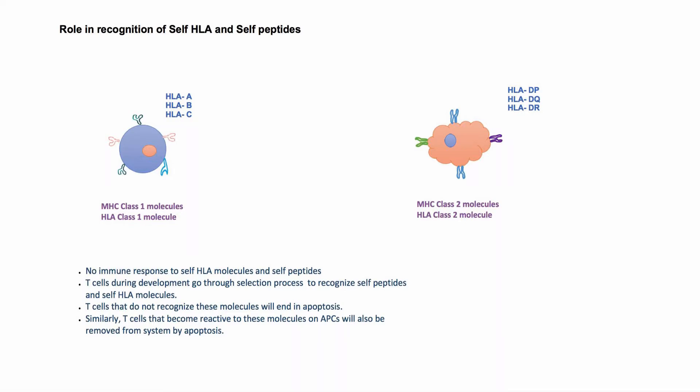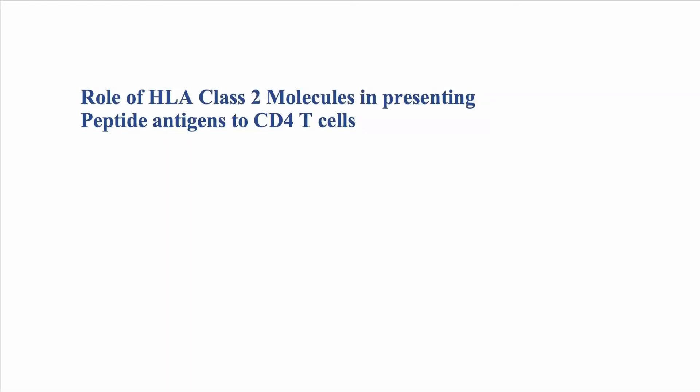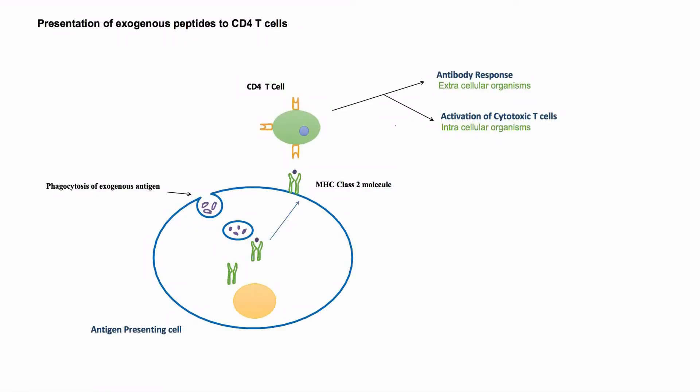Whenever these cells come across self HLA and self peptides in the future, they will recognize it as self and will not take any further actions. However, whenever these cells come across unfamiliar peptides, they will potentially initiate an immune response.